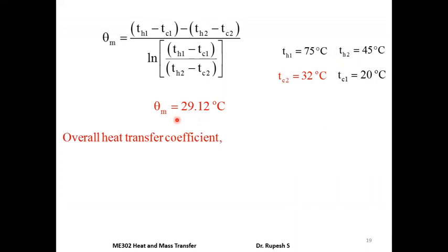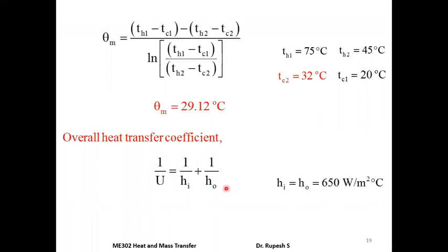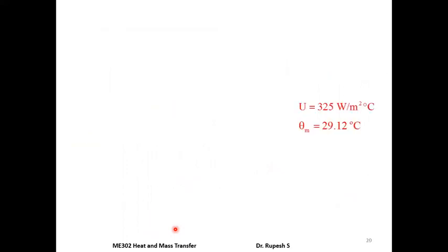Next, the overall heat transfer coefficient U. It can be approximated by: 1/U = 1/hi + 1/ho. In this question hi and ho are both equal to 650 W/m²°C. Substituting gives U = 325 W/m²°C.